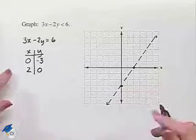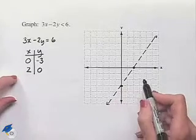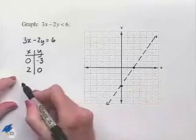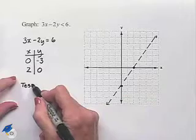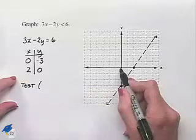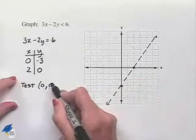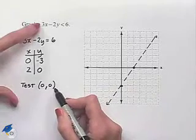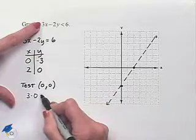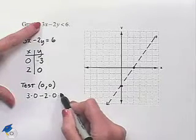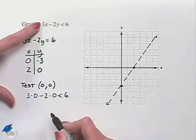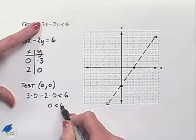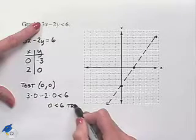Now we want to use a test point in order to determine which side of this straight line is going to be shaded in. So let's just pick a test point that's pretty obvious, and we can see that the origin is here, which is obviously on one side of that equation. Let's substitute into our given inequality. We're going to have 3 times 0 minus 2 times 0, and we're trying to see the truth value of that statement. 0 minus 0 is 0. 0 is less than 6, which means that this is a true statement.